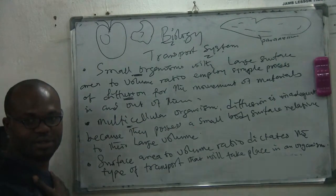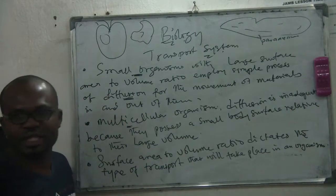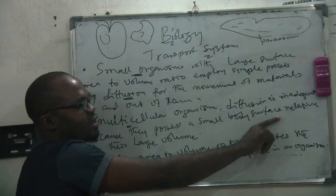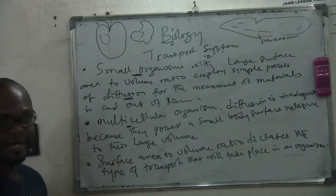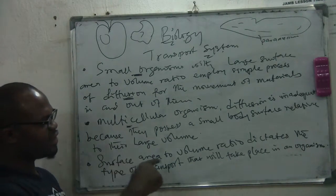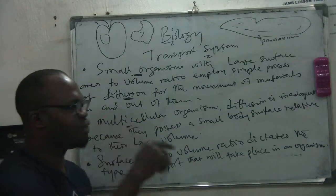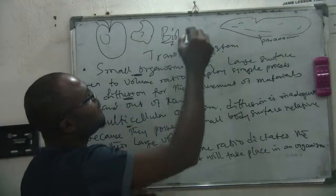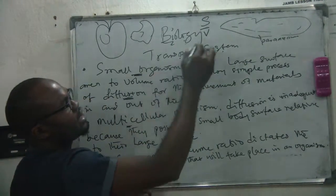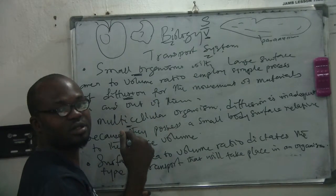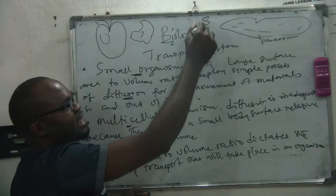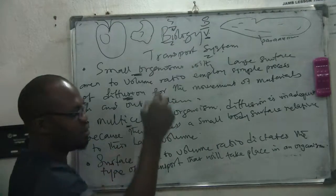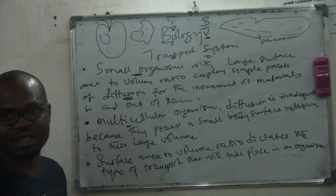In multicellular organisms like us, diffusion is inadequate - it is simply not enough - because they possess a small body surface relative to their large volume. For us as human beings, our volume is big compared to our surface area, so we need extensive transportation. Surface area to volume ratio dictates the type of transport. An organism with high surface area to volume ratio uses diffusion. One with small surface area to volume ratio uses a transport system.